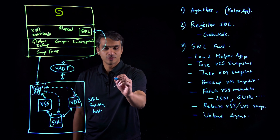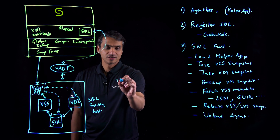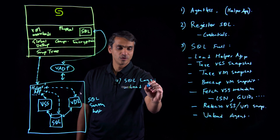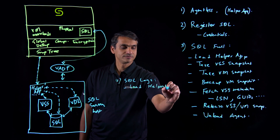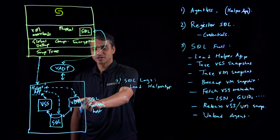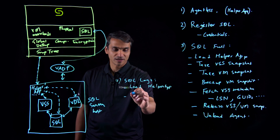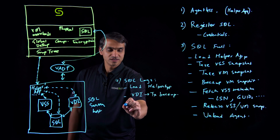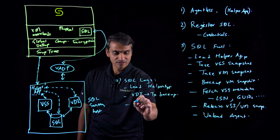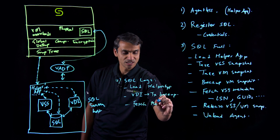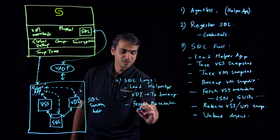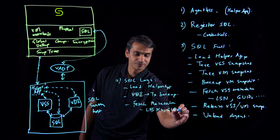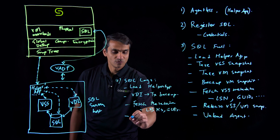The SQL log backup flow is fairly similar to that of a full backup. First, we load the helper app. In this case, we interface with the VDI to perform the transaction log backup. Once the transaction logs are backed up, we fetch the metadata and save it on Cohesity. This metadata includes log sequence numbers, GUIDs, and so on. Once the metadata is saved, we unload the agent.